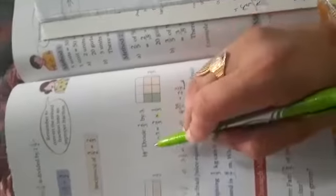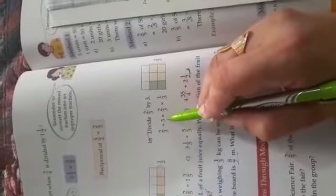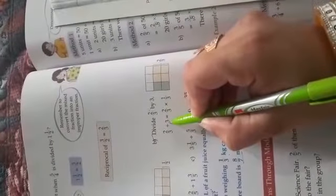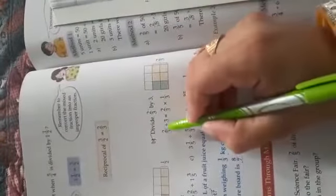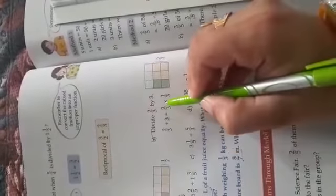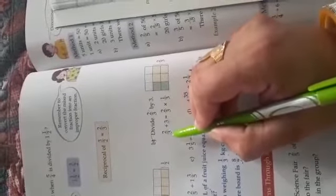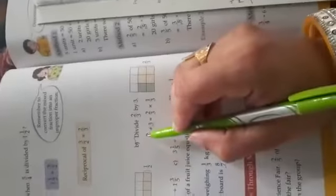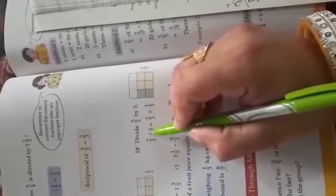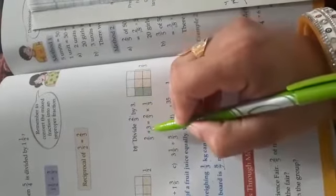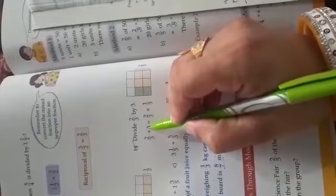That is our answer. Now the next sum is 2 by 3 by 3, which means 2/3 divided by 3. Again, 3's denominator is not given, so it's 3/1. Change divide into multiply. Write the first statement as it is: 2/3, then change divide to multiply, so 1 goes to the upper side and 3 goes down.